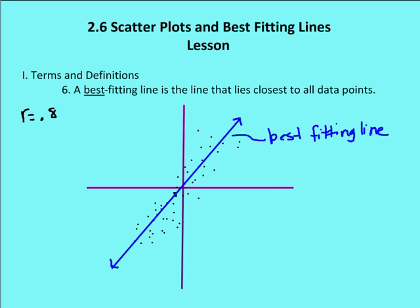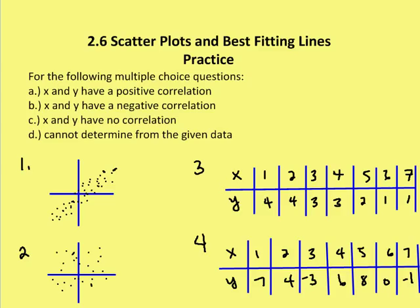Let's take on a couple practice problems. For the following multiple choice questions, you have to determine whether X and Y have a positive correlation, a negative correlation, no correlation, or cannot determine from the given data. At number one, it looks like there's a strong positive correlation, because as X increases, the Y values also increase — we have a slope on the best fitting line that's moving up to the right. So the answer to number one is A. Number two looks like we have a bunch of points scattered like a Jackson Pollock painting over the graph, so I'm going to say they have no correlation. I can't say it's moving up to the right or down to the right, so this one is C.